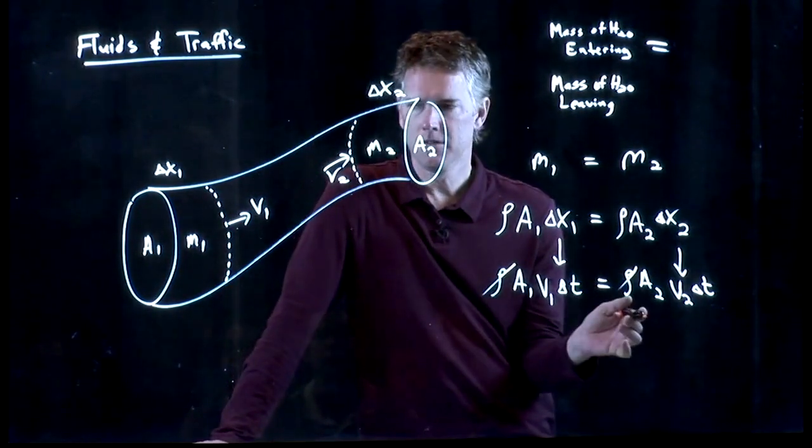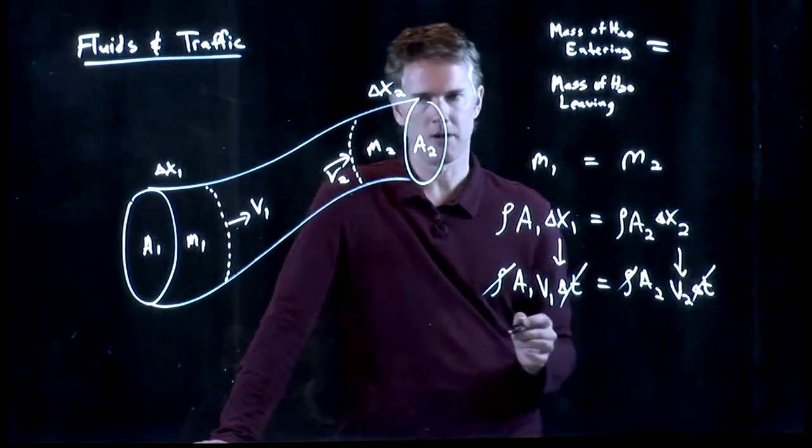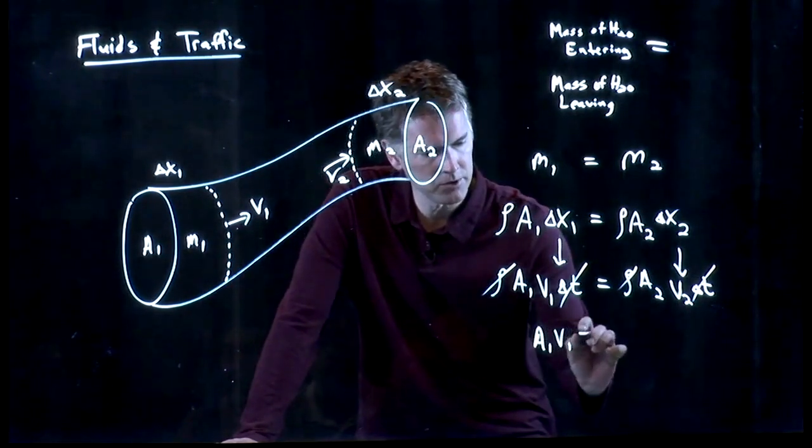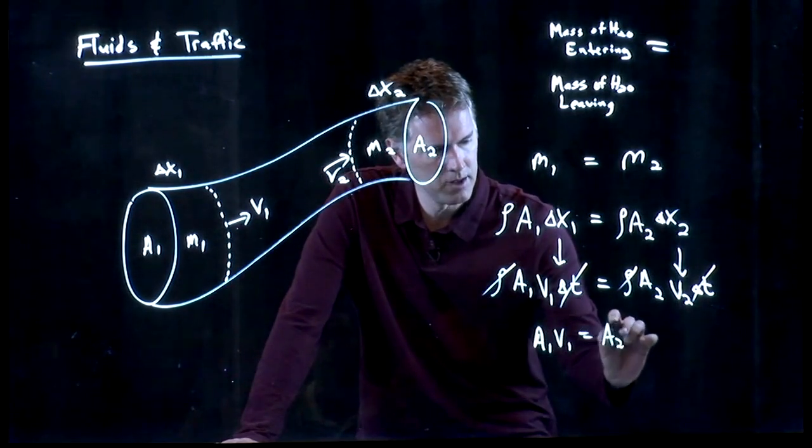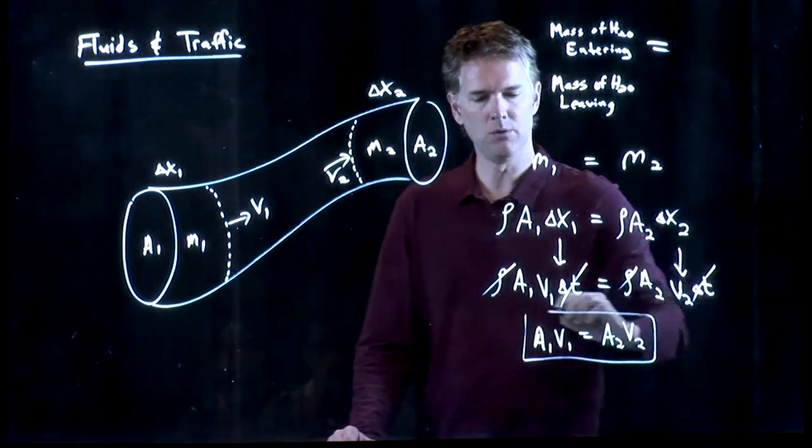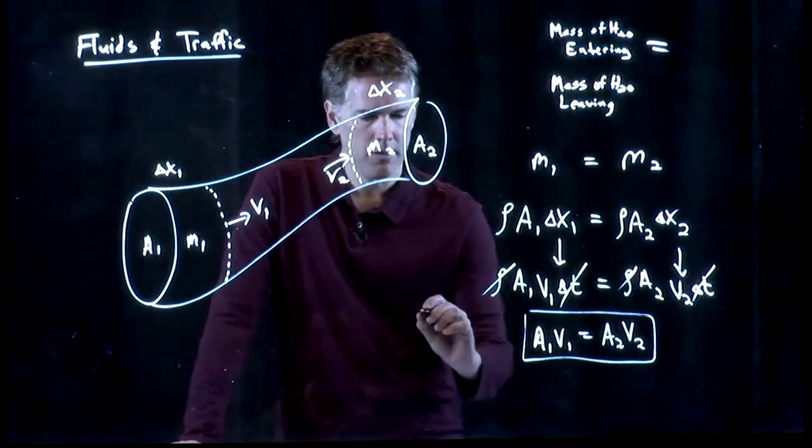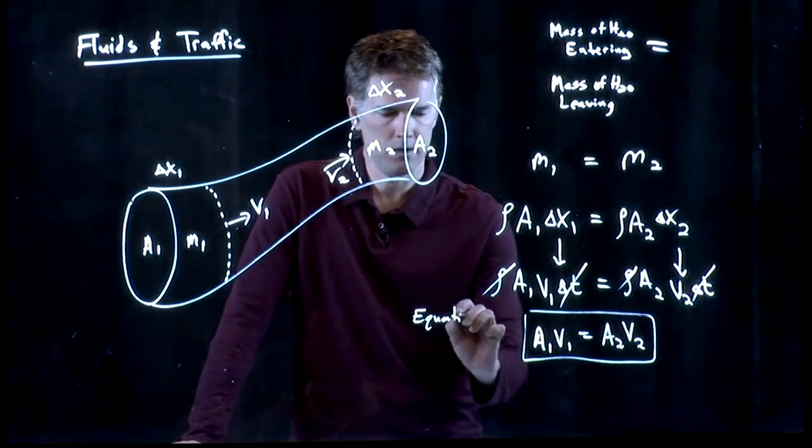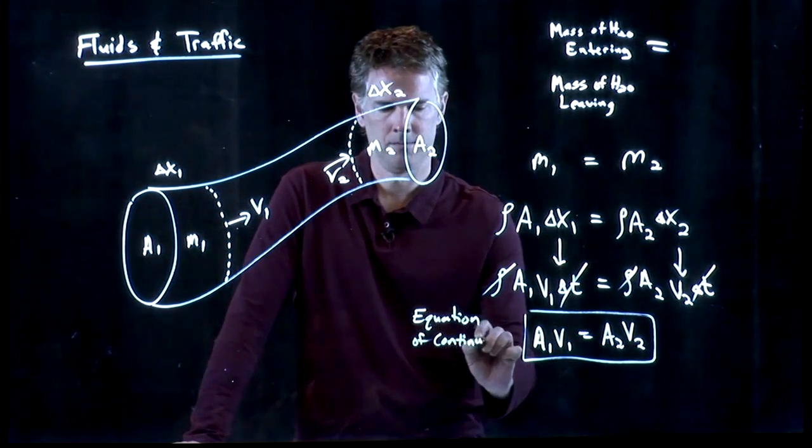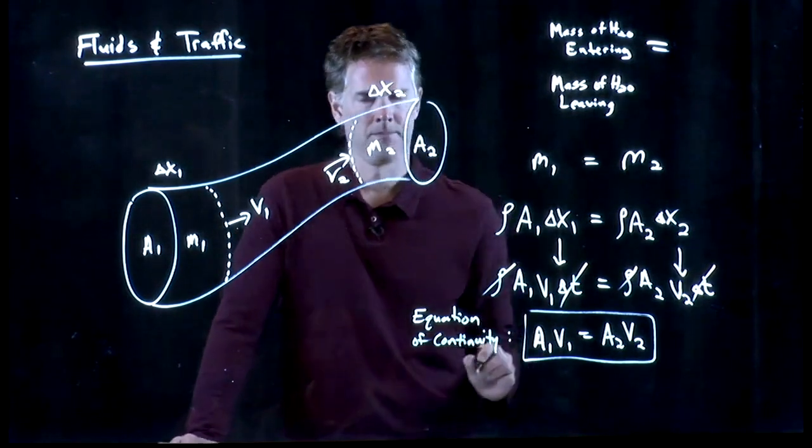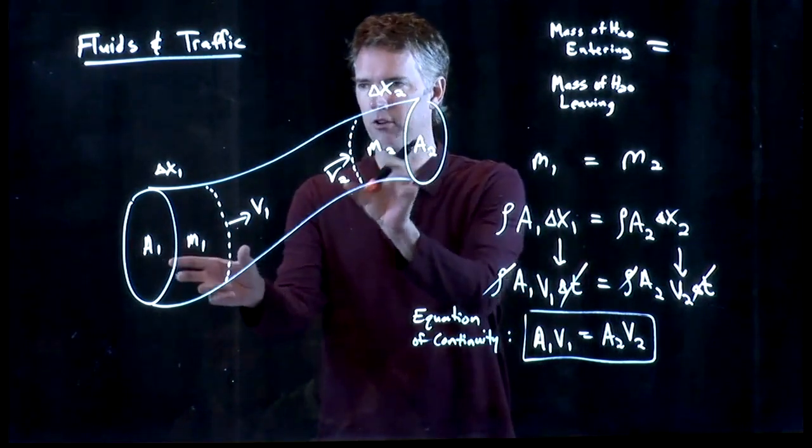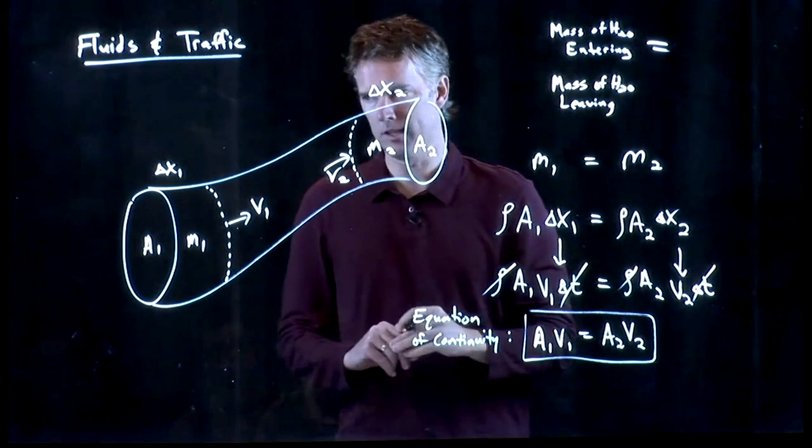Delta T is going to be the same. Pick some amount of time on your stopwatch, and we get a very nice relationship between these two things. A1 V1 equals A2 V2. And this is known as the equation of continuity for fluids.